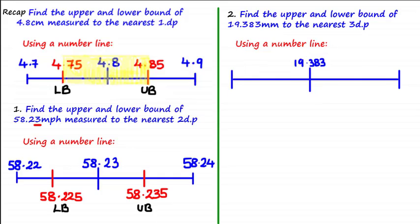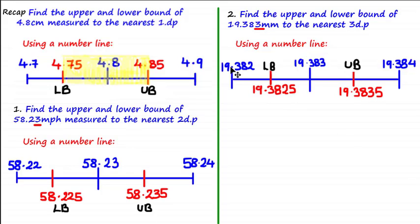The value at the third decimal place is 3. We find the next value up by adding 1, and the next value down by subtracting 1. The lower bound is 19.3825 and the upper bound is 19.3835. If you're struggling to see how to calculate the midpoints, simply take the sum of the two values and divide by 2.